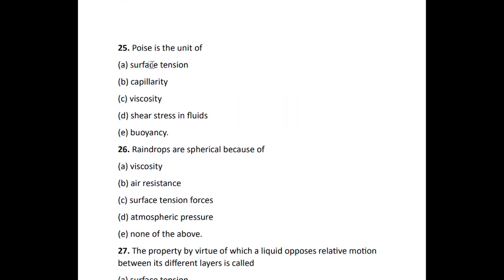Number twenty-five: poise is the unit of viscosity. So viscosity can be measured in poise. Number twenty-six: rain drops are spherical because of surface tension forces.